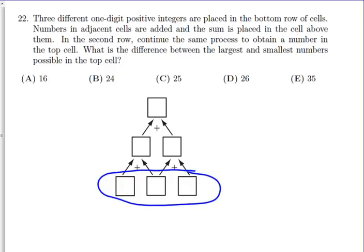The second row continues the same process to obtain a number in the top cell. You add the two in the bottom row to get to the second row, then add the second row to get the top row. The question asks: what is the difference between the largest and smallest numbers possible in the top cell?